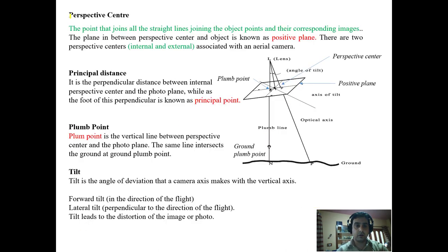Now we have different definitions called perspective center. It is the point that joins all straight lines drawing the objects and corresponding images, which is here. This will be the perspective center, and the plane in between perspective center and object is known as the positive plane. You can see here this will be the positive plane.